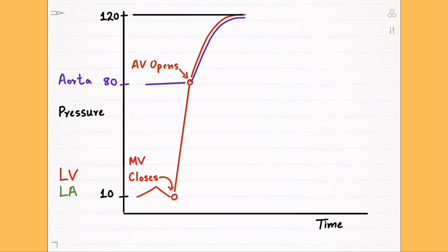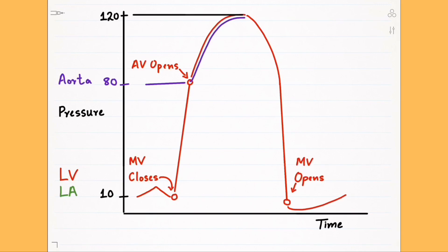After pushing the blood out, the left ventricle starts relaxing, so the pressure inside decreases until the mitral valve opens and blood starts pouring into the left ventricle again. When the left ventricle pressure starts decreasing, the blood inside the aorta tries to flow back because the aortic pressure is now higher than the left ventricle pressure, and blood always moves from high pressure to low pressure. Because of this pressure decrease, the aortic valve closes to prevent backflow, which is why the aortic pressure does not come down as low as the left ventricular pressure during diastole.